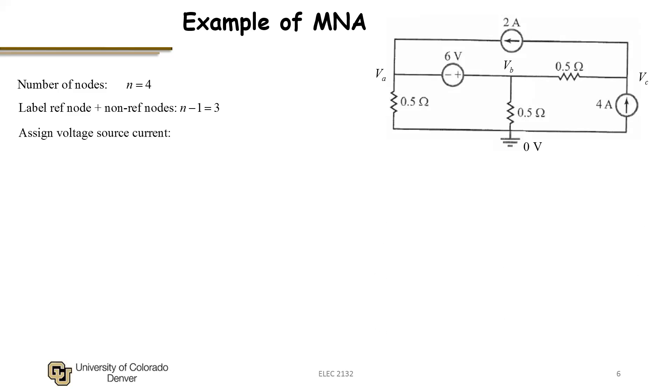What I do notice is that I have a voltage source, and I'm going to assign the source a current. So I'll just assign the current, I'll call it I_BA. I choose the current flowing into the high potential of the voltage. It doesn't matter, it can also flow into the low potential.